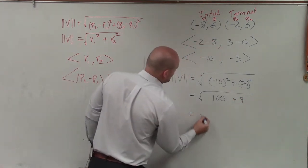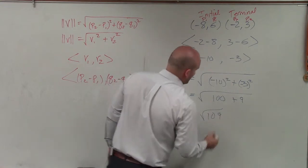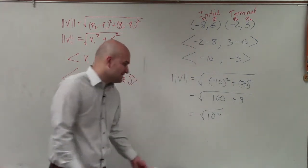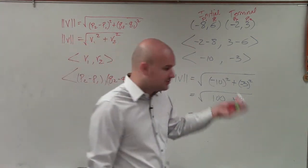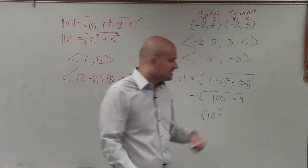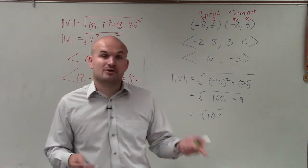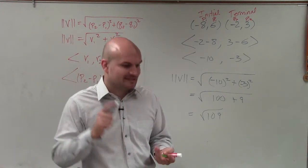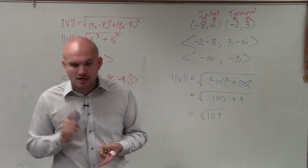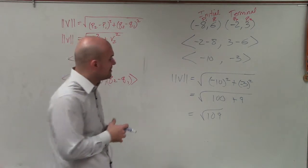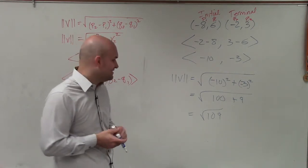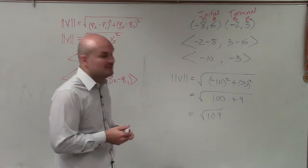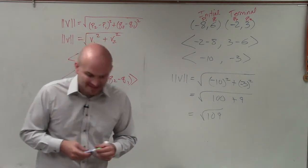Now what I want to see is, as far as my square numbers, do any of my square numbers evenly divide into 109? My square numbers being like 4, 9, 16, 36, 49. None of my square terms are going to divide evenly into 109, so that is going to be my simplified magnitude. Thanks.